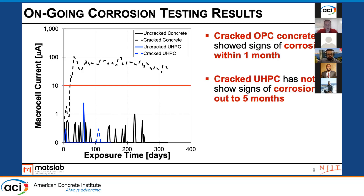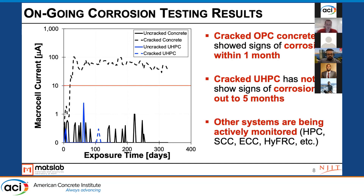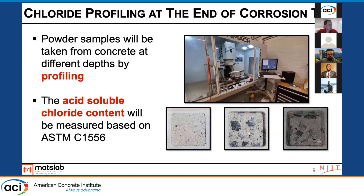The cracked UHPC has not shown signs of corrosion out to five months, and other systems are actively being monitored in this study. At a later date when this study is concluded, I'll have more to share on the differences between systems. As we collect information at the end of the test, we'll be determining acid soluble chloride content through profiling. We've done this for some of the systems in other experiments, but that will be another step at a later date.